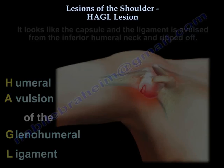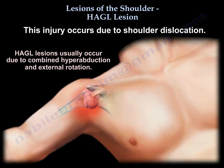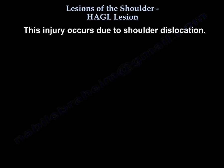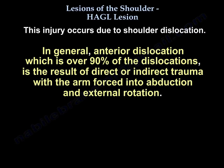It occurs in shoulder dislocation, usually due to combined hyperabduction and external rotation. In general, anterior dislocation — which is over 90% of dislocations — is the result of direct or indirect trauma with the arm forced into abduction and external rotation.